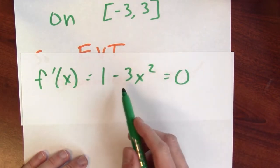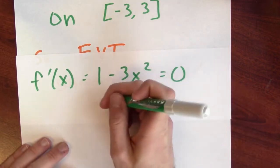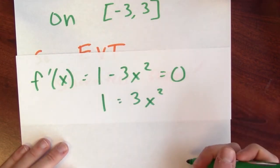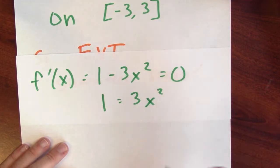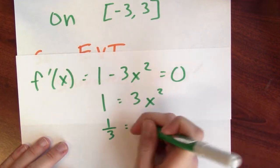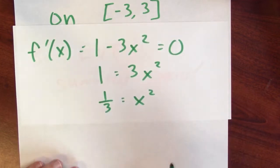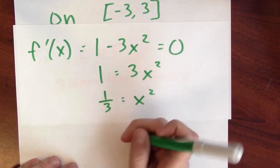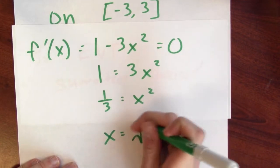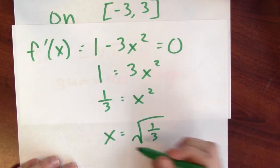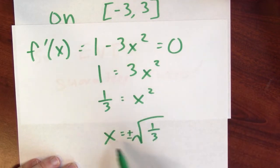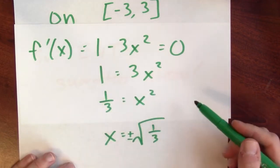So I'm trying to solve this equation. I'll add 3x squared to both sides. I'm really trying to solve the equation 1 equals 3x squared. Divide both sides by 3. So now I'm trying to solve the equation 1 third equals x squared. Now I'll take a square root of both sides and I'll find that x is equal to the square root of a third or maybe negative the square root of a third. So I'll write x is plus or minus the square root of a third. These are the two critical points for this function.